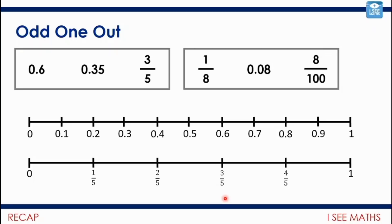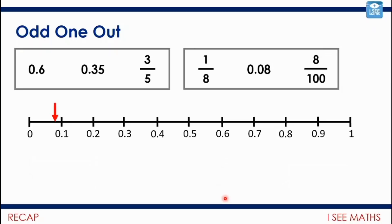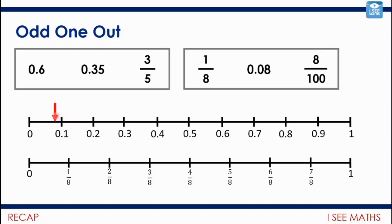Now: an eighth, 0.08, and 8 hundredths. The 0.08 will be around about here — a little bit less than 0.1. That can be represented by 0.08 or as 8 hundredths. Rather than splitting into tenths, if I want to go more precise I might split into hundredths: 10 hundredths there, 8 hundredths there. What about an eighth? Let's take this number line, split it into eight equal pieces. Each piece will be just a bit more than 0.1, so the odd one out is an eighth.